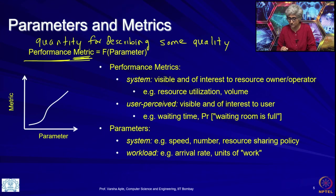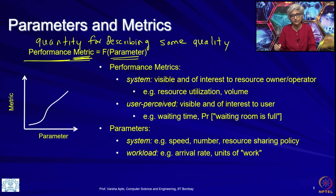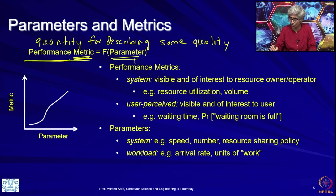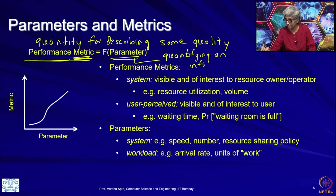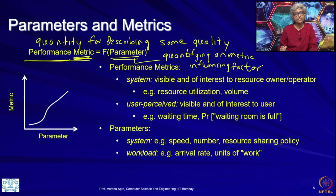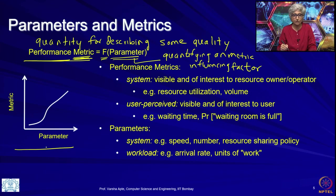What is a parameter? A parameter is something about the system that affects the metric. Recall from the previous lecture we talked about speed of the resource, how many resources there are, workload intensity — the quantitative versions of these are parameters, i.e., quantifying an influencing factor of a metric. Basically the metric is going to be a function of the parameter. We will generally plot a metric as a function of a parameter.